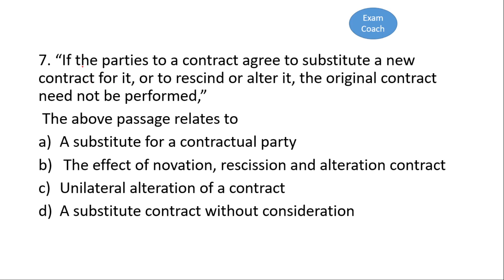The next question: if the parties to a contract agree to substitute a new contract for it, or to rescind or alter it, the original contract need not be performed. The correct option is option B — it relates to the effect of novation, rescission, and alteration of a contract. Novation applies when a new contract is substituted for the old one. Rescission or alteration also have the effect that the original contract need not be performed.